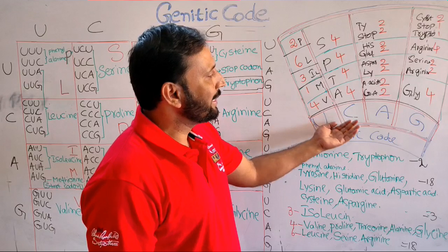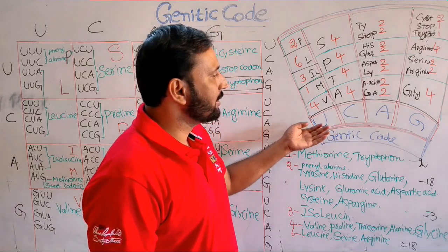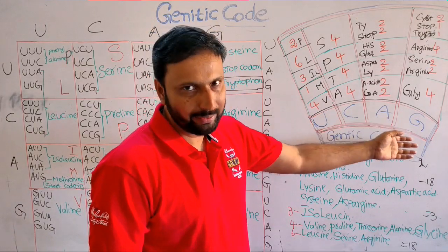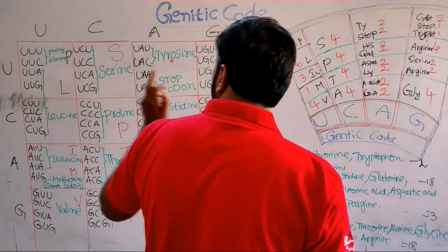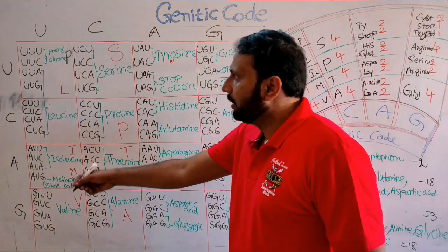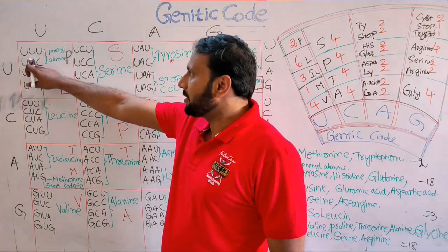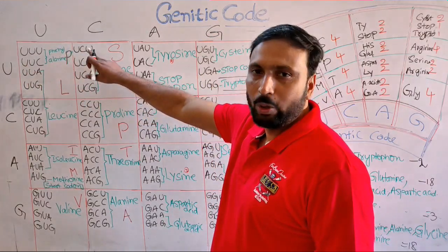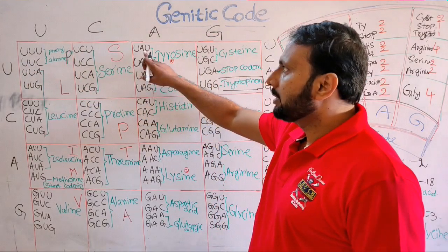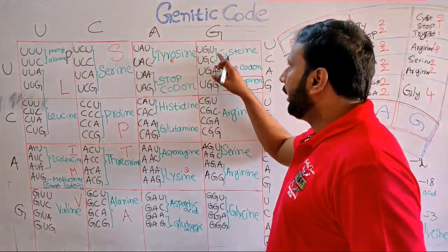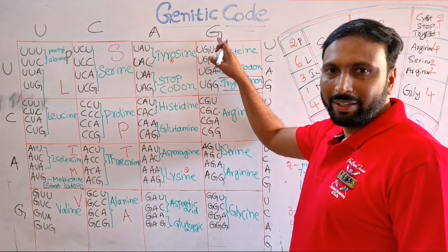Look at here. U-C-A-G. U means uracil, C cytosine, A adenine, G guanine. I am taking uracil. In the first row, the second nucleotide is uracil. In the second row, the second nucleotide is cytosine. In the third row, the second nucleotide is adenine. In the fourth row, the second nucleotide is guanine.